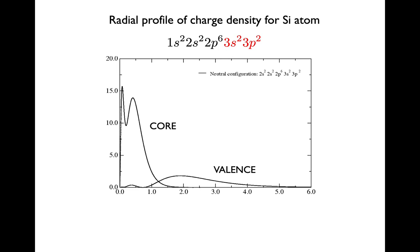Imagine that you are able to plot the radial profile of the charge density of the silicon atom and you do that for the core and the valence part separately. The valence in this case is the 3s and 3p orbitals marked here in red and corresponding to this spread out valence charge.